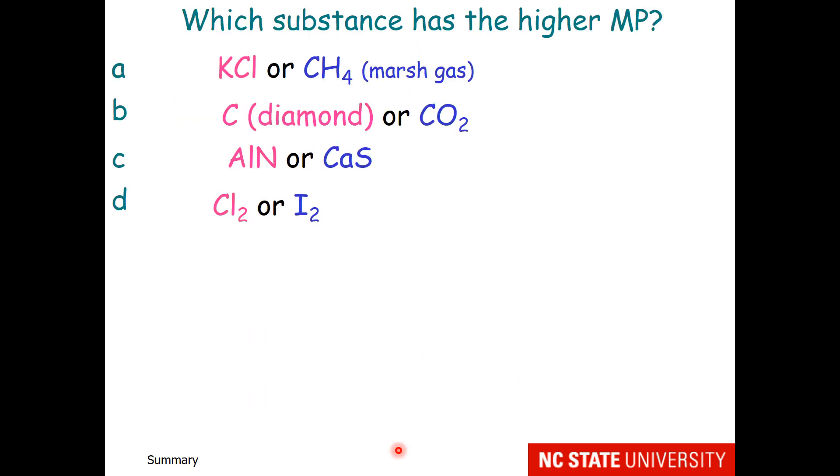Here's a series of questions regarding which substance has the higher melting point, which means which substance has the higher interaction energy. I'm reasonably certain you could guess between potassium chloride and methane just from being alive on this planet.